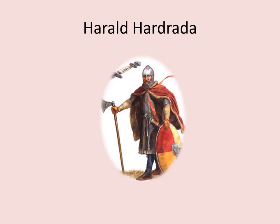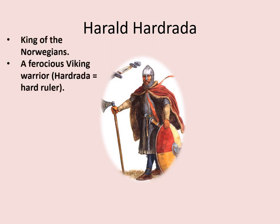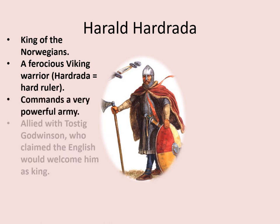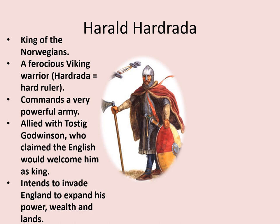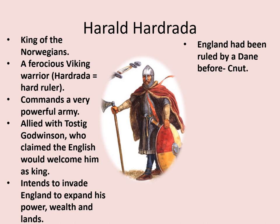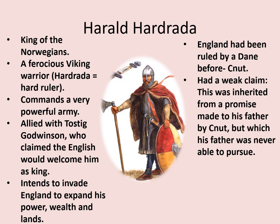Harold Hardrada had quite a flimsy claim in some respects, but it was backed by a powerful army. He was already the king of the Norwegians and a ferocious Viking warrior — Hardrada actually means harsh counsel or hard ruler. He commanded a very powerful army of Viking warriors and was allied with Tostig Godwinson, who claimed the English would welcome him as king. England had been ruled by a Dane before, King Cnut, considered a strong and effective ruler. However, Hardrada's claim was quite weak, inherited from a promise made to his father by Cnut, which his father was never able to pursue.